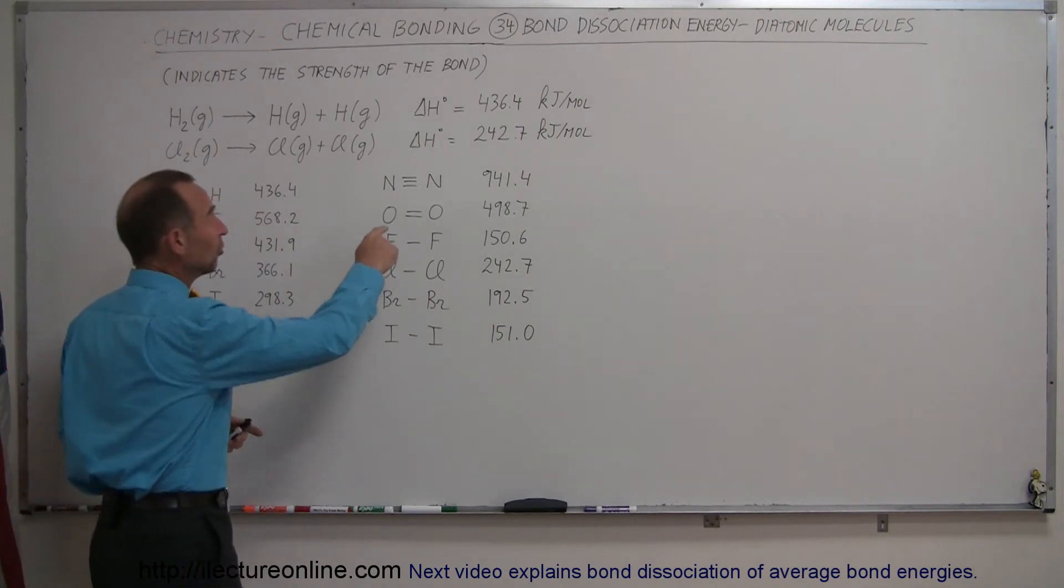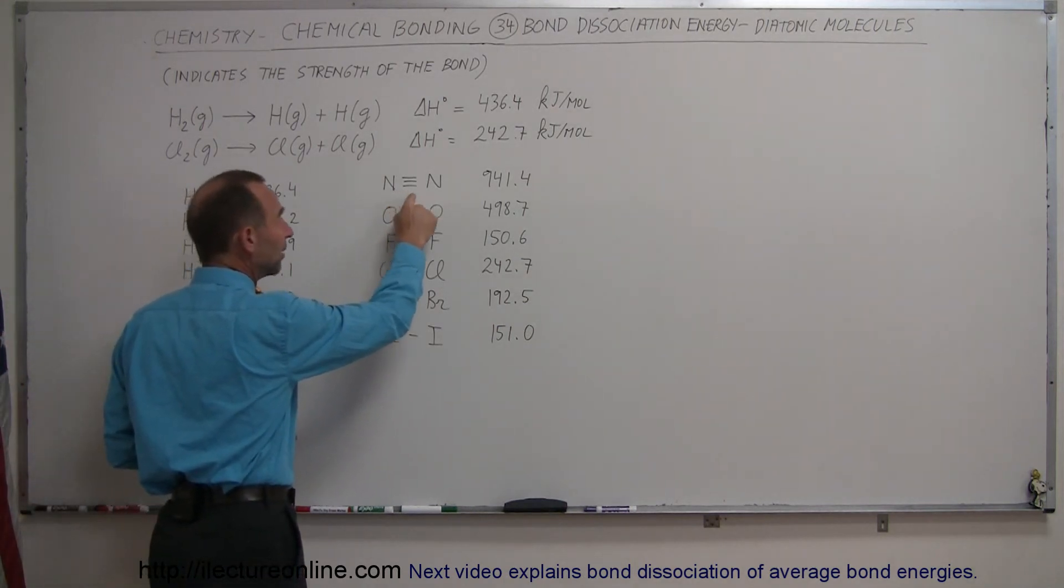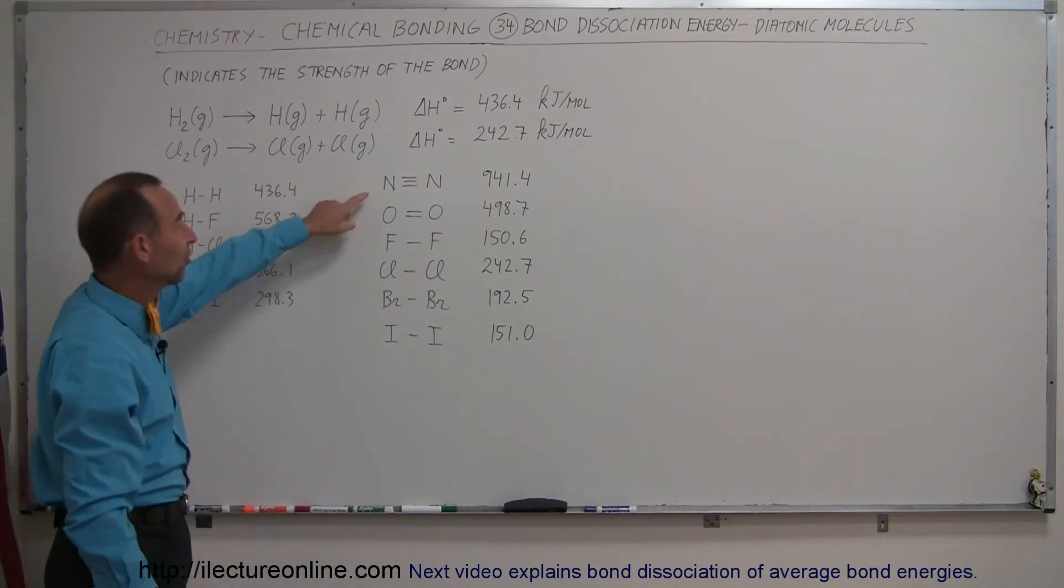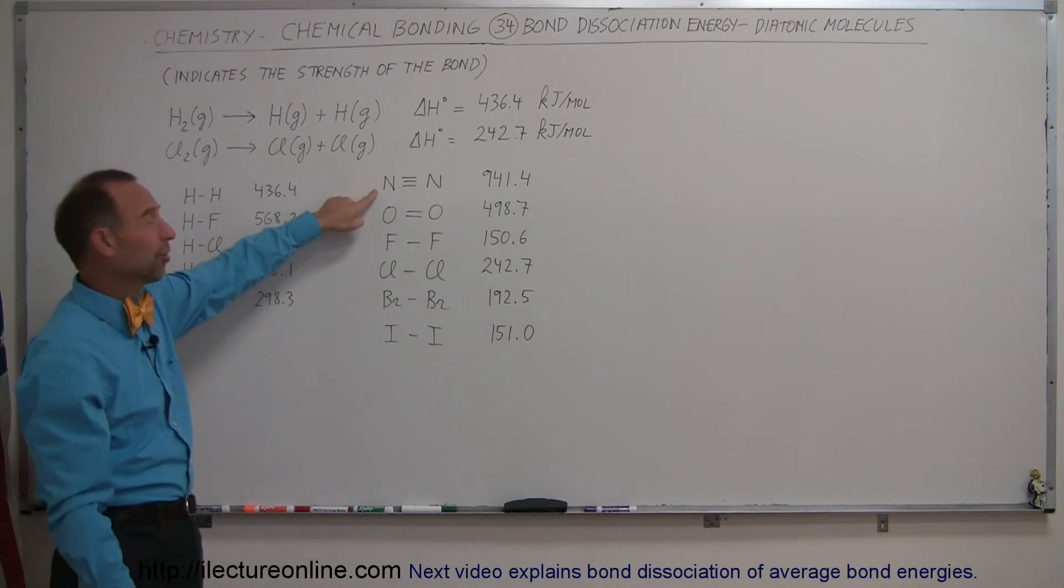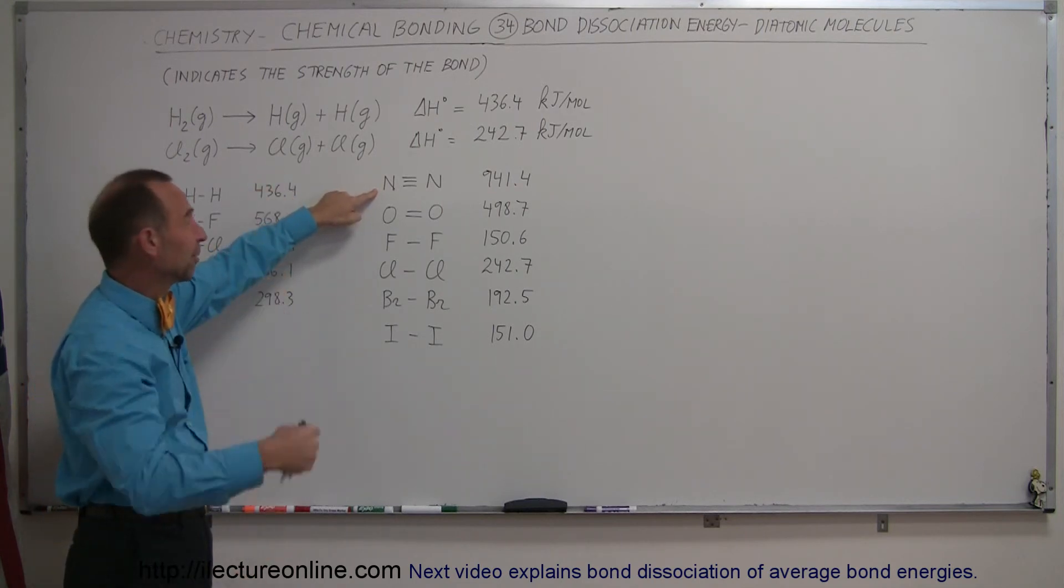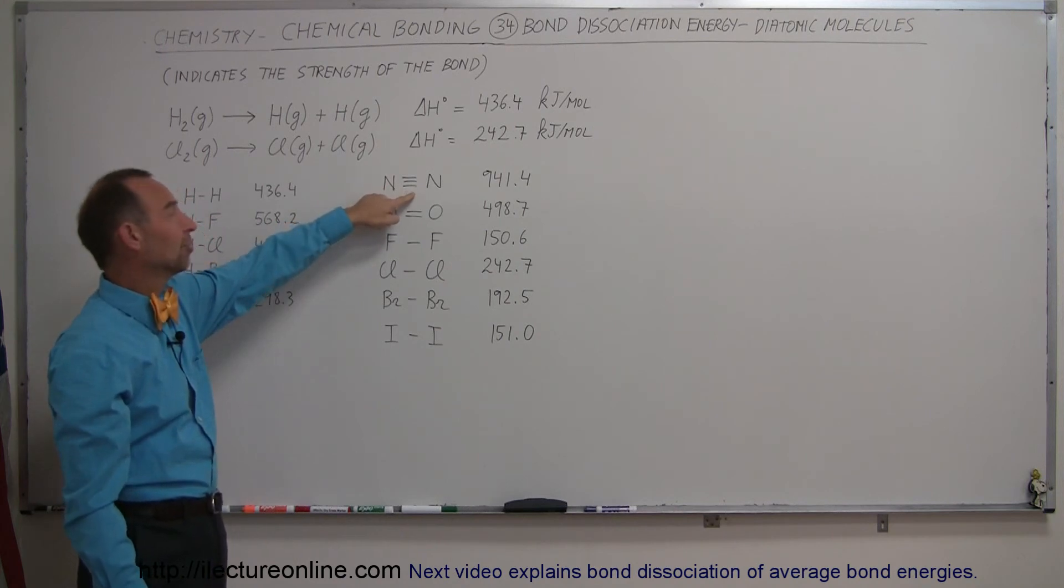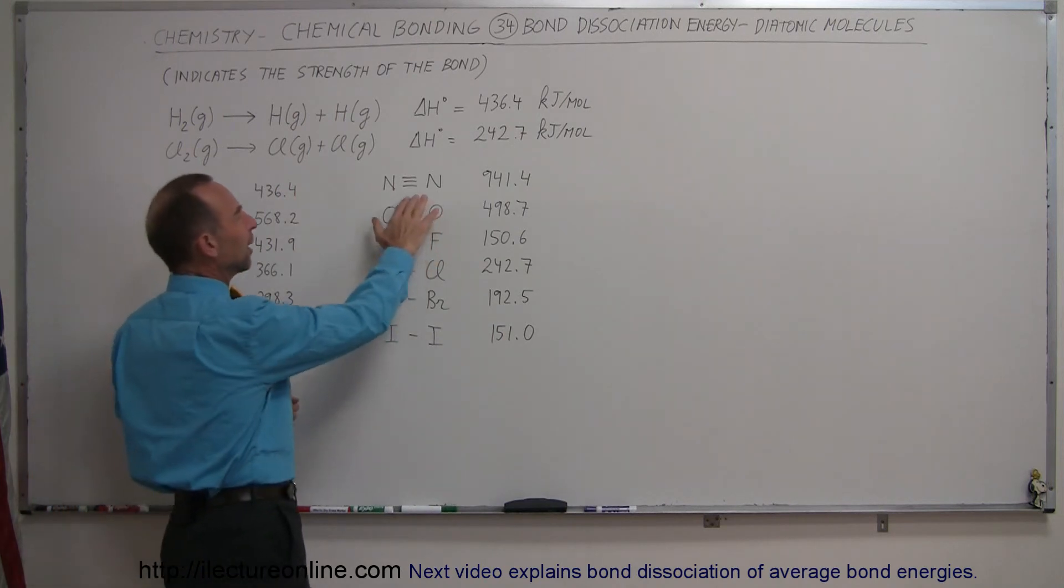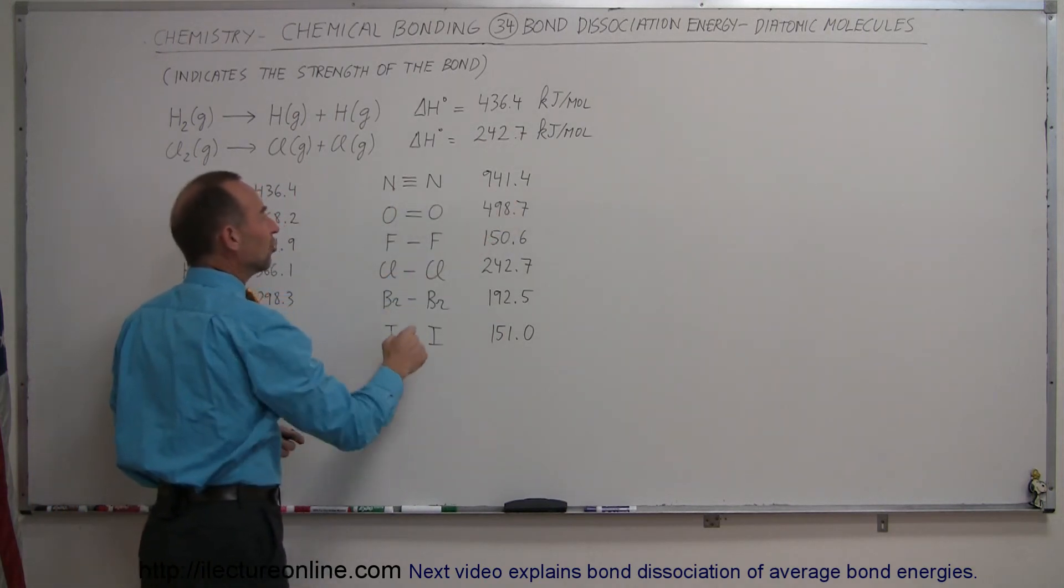Now, take a look over here. The nitrogen to nitrogen bond, which is a triple bond, is a very strong bond. As a matter of fact, it is this bond that protects us from the very harmful X-rays and gamma rays radiation that come in from space, because when it hits this molecule, this molecule is able to absorb that energy, and the energy is then used to break those nitrogen molecules apart. Very high energy.